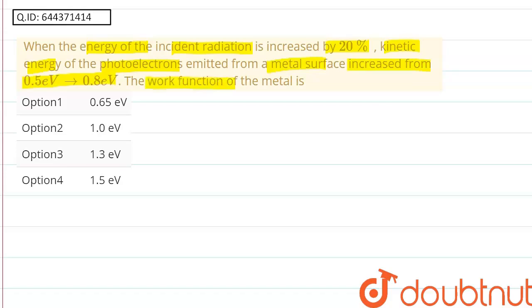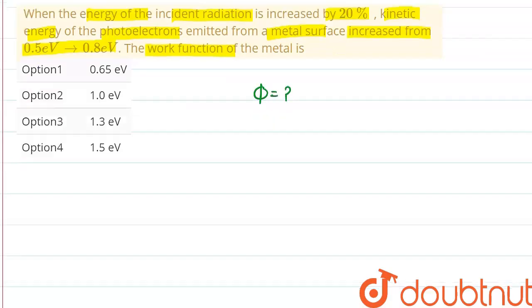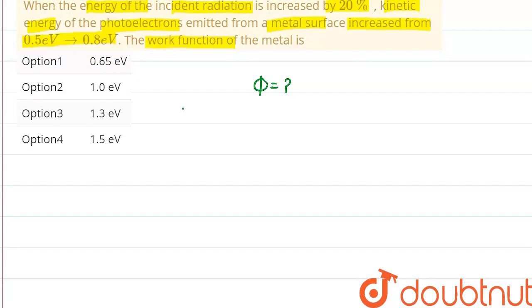The work function of the metal is, so we need to find the work function of metal. Now according to Einstein equation, we know that kinetic energy of a photoelectron is equal to energy of incident radiation minus work function of the metal.